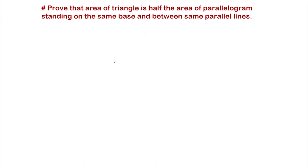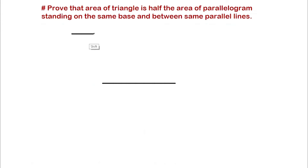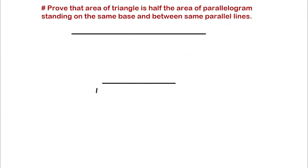First, let's make a figure. Let's say we have a line over here, and another line over here which is parallel to our first line. Let's name these lines: this line AB and this line CD.